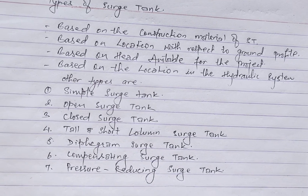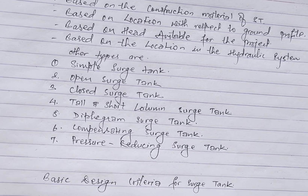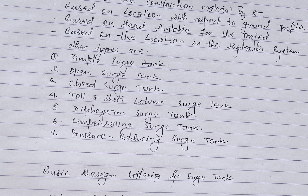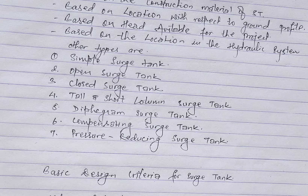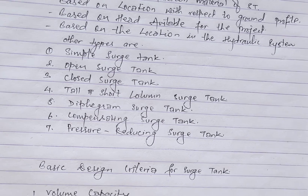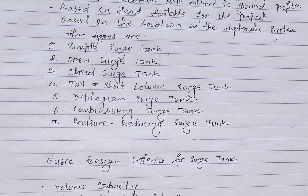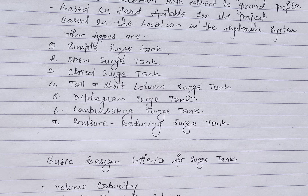Now let's talk about the basic design criteria for source tanks. The design of a source tank involves considering various factors to ensure its effectiveness in managing pressure fluctuations in a fluid system. The first criterion is volume capacity: the appropriate volume of the source tank must account for expected transient changes in fluid flow. The tank's volume should be sufficient to absorb excess fluid during high demand and release it during low demand.